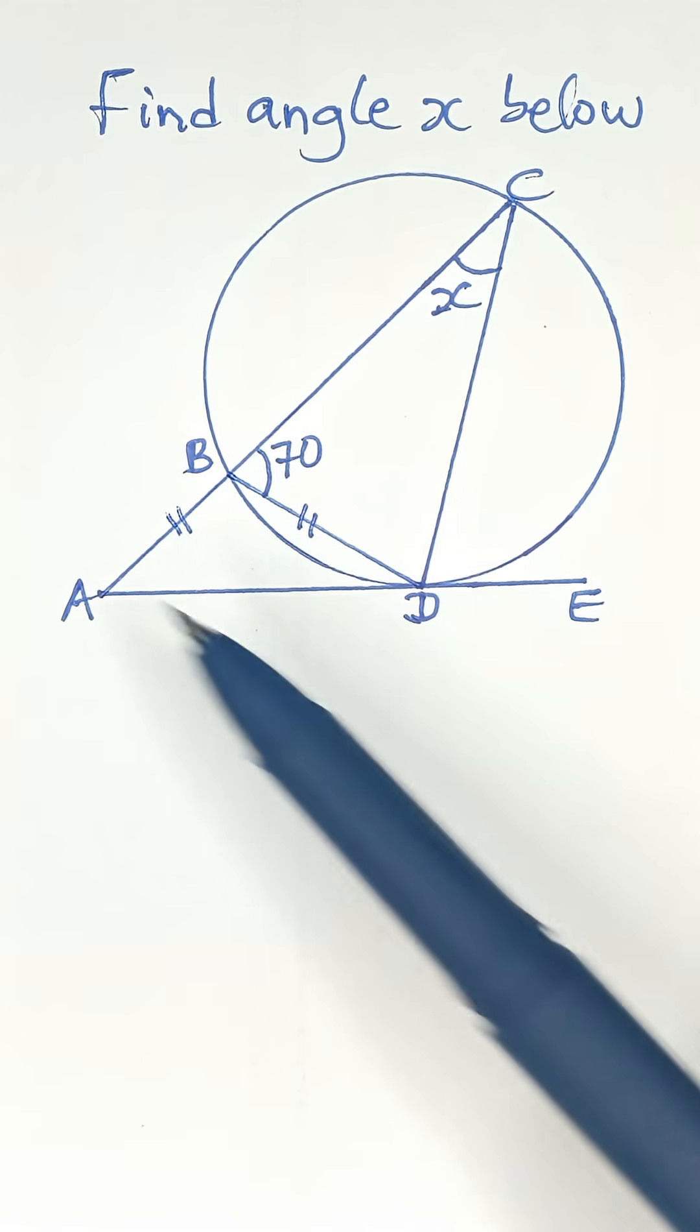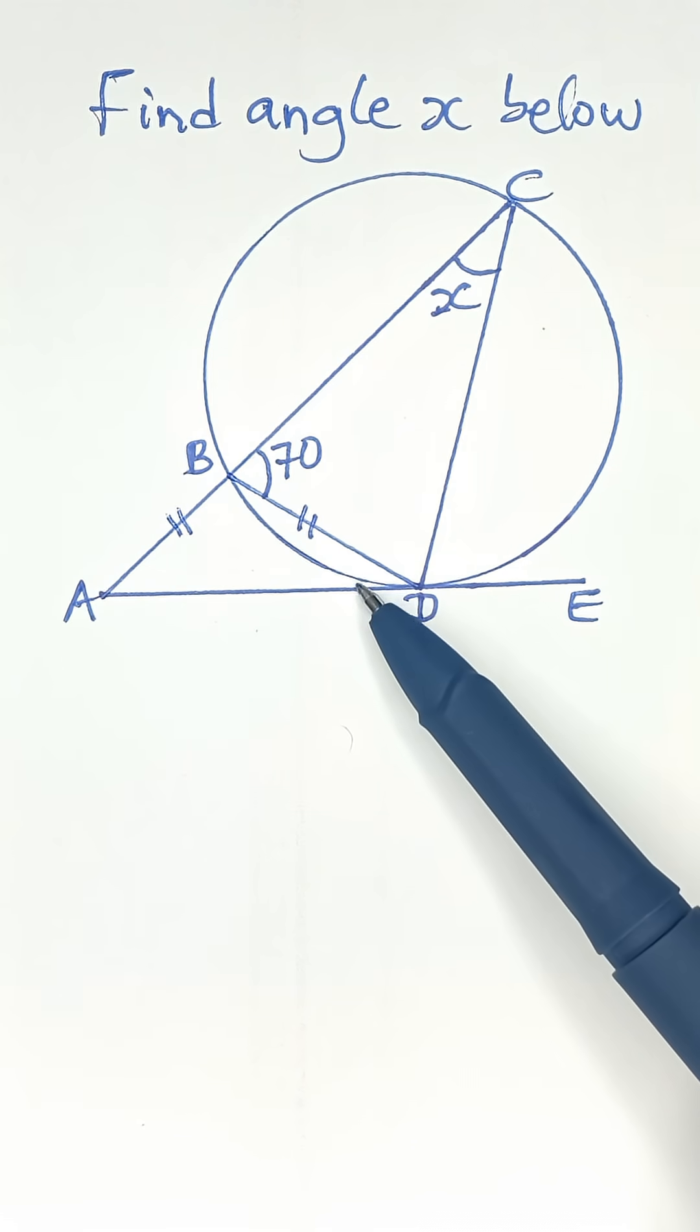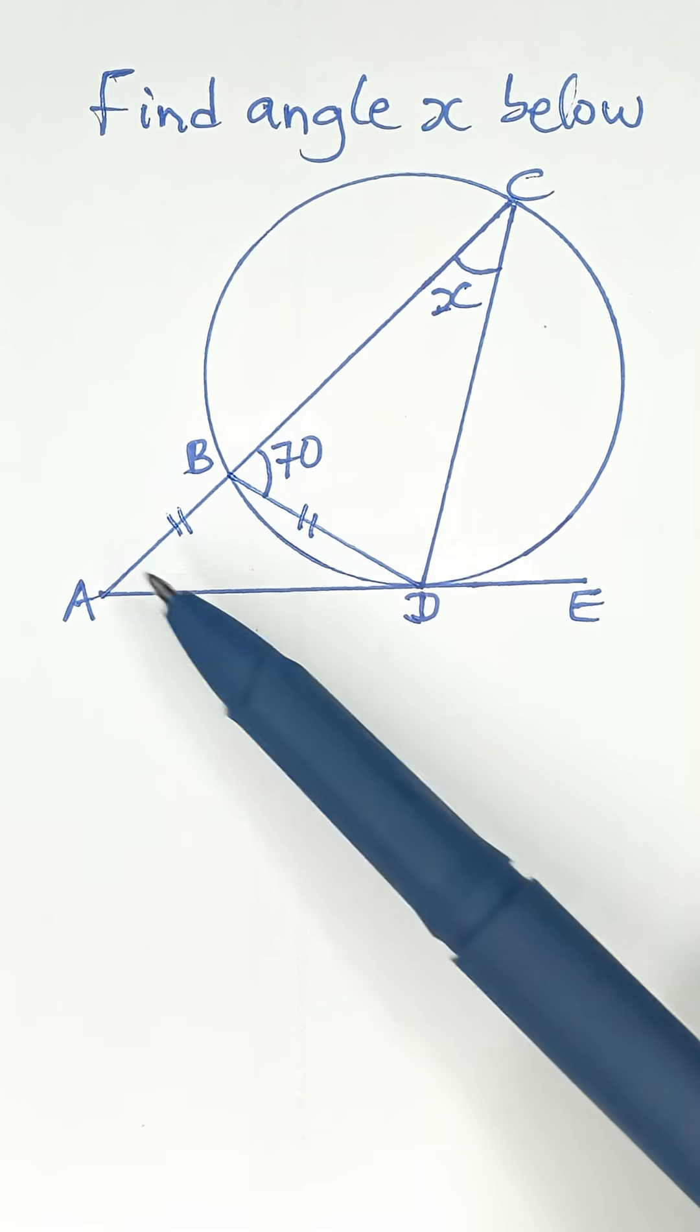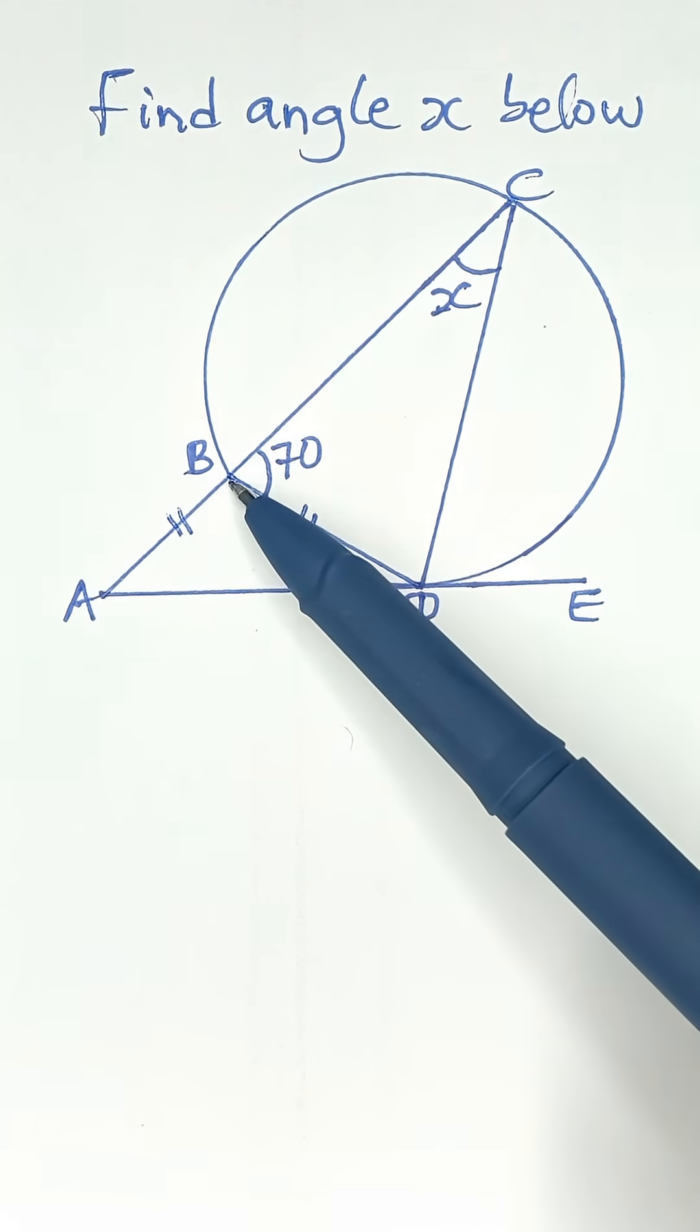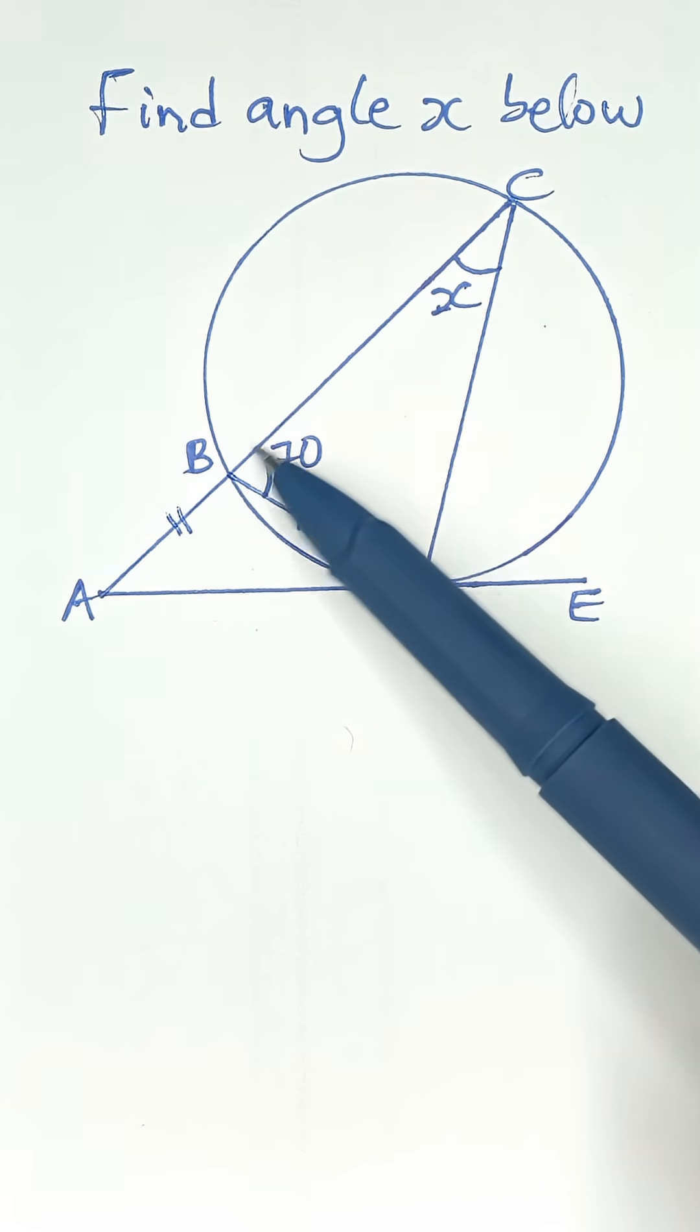Because it is an isosceles triangle, the base angles are equal, so this angle equals this angle. The line AB has been extended outwards to continue a straight line, forming an exterior angle equal to 70 degrees.